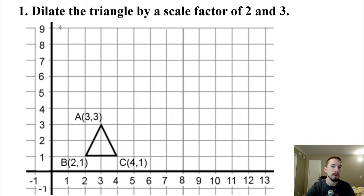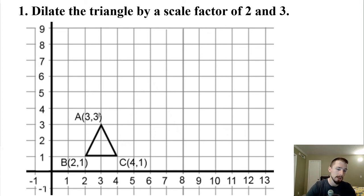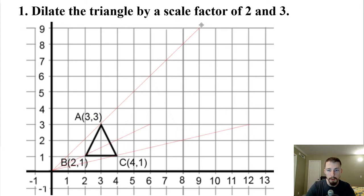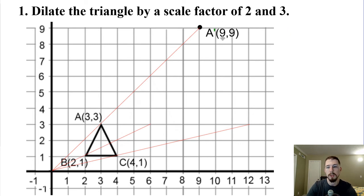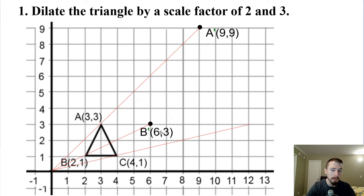Let's go ahead and get started on the assignment. If you're in person, I'll give you these worksheets so you can take a photo. If you're learning from home, I'll attach it to the assignment. Number one: dilate the triangle by a scale factor of three first. Taking all three points A, B, and C and multiplying all their coordinates by three: (3, 3) turns into (9, 9), which is A prime. The point (2, 1) times three is (6, 3), so B prime is (6, 3). And (4, 1) becomes (12, 3), which is C prime.